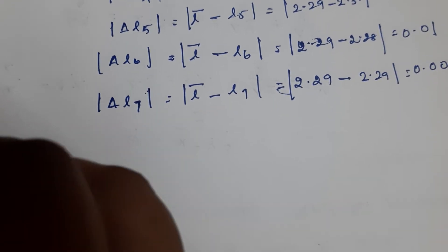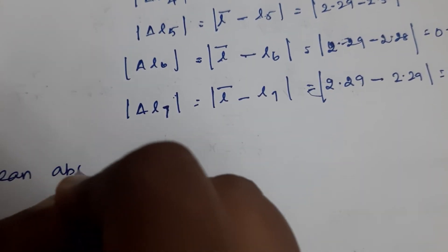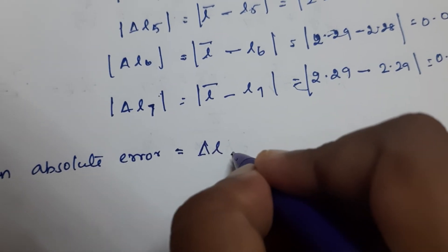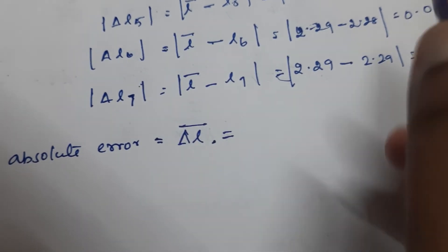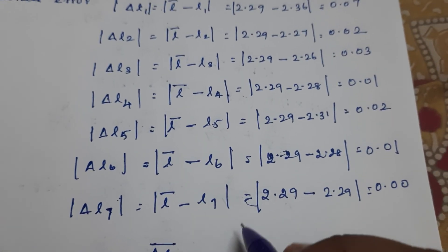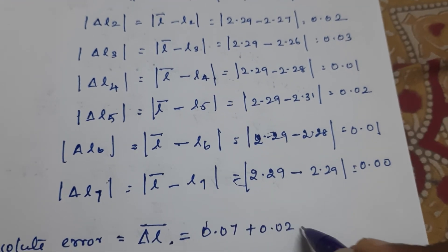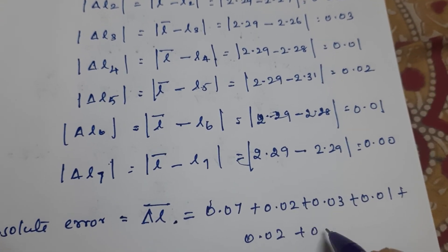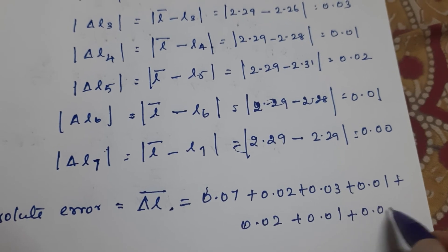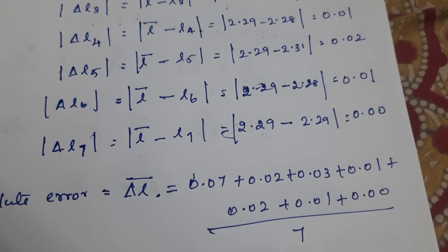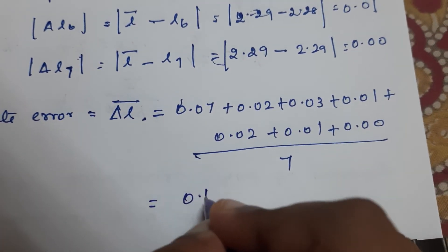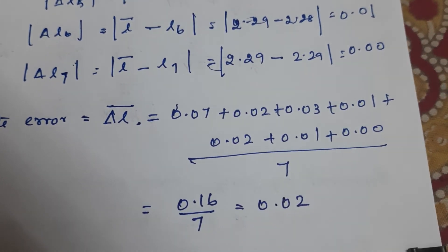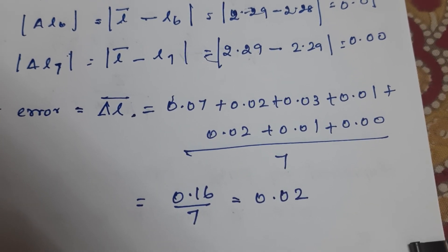Now we find the mean absolute error, ΔL. That is the sum of all absolute errors divided by 7: (0.07 + 0.02 + 0.03 + 0.01 + 0.02 + 0.01 + 0.00) divided by 7 = 0.16 divided by 7, which gives 0.02 cm. So we have the mean absolute error.